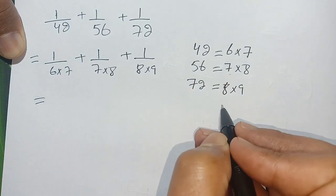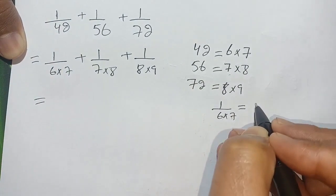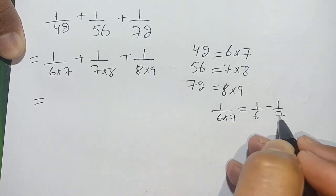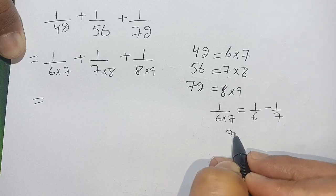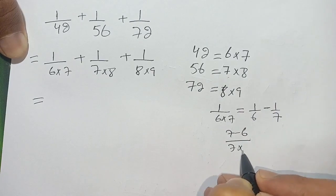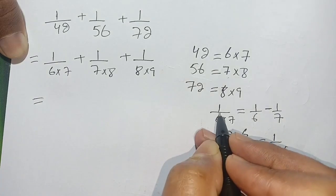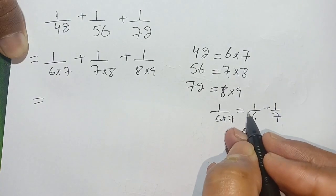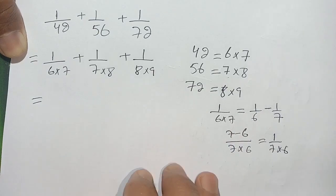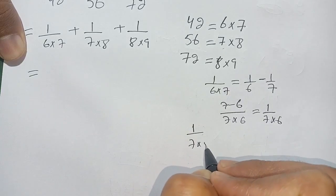1 divided by 6 times 7 becomes 1 divided by 6 minus 1 divided by 7, because when we solve this it becomes 7 minus 6 divided by 7 times 6, which equals 1 divided by 6 times 7. Thus, 1 divided by 6 times 7 can be written as 1 divided by 6 minus 1 divided by 7. Same case with 1 divided by 7 times 8.